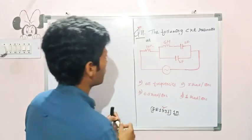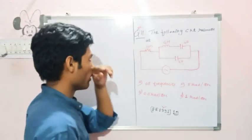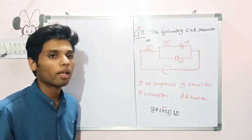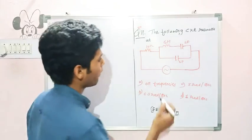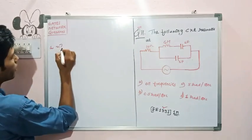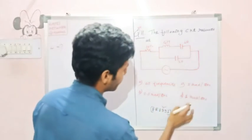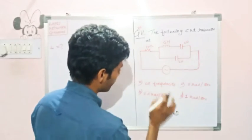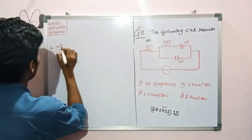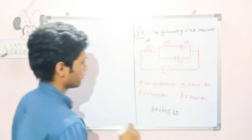The question asks: the following circuit resonates at what value of omega? We need to calculate the angular frequency omega in radian per second under the resonant condition.